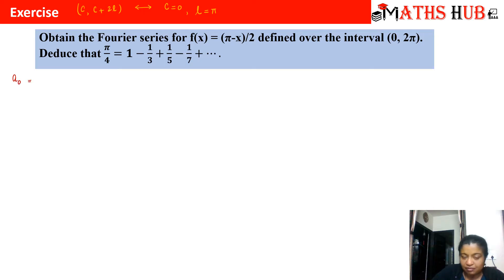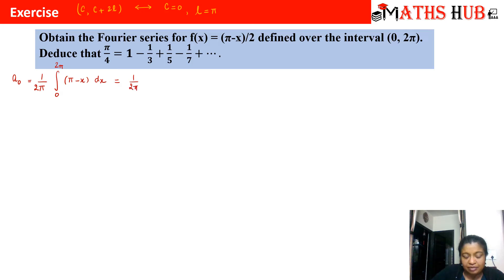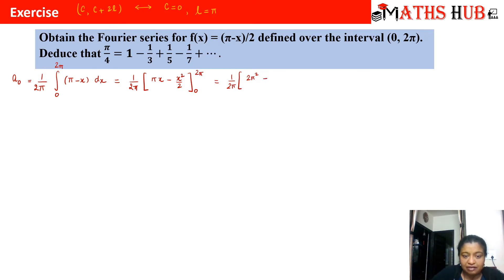I'll substitute the values directly without writing the general formula. So a₀ = (1/l) × integral from 0 to 2π of f(x) = (1/π) × integral of (π - x)/2 dx. Integrating: (1/2π)[πx - x²/2] from 0 to 2π gives (1/2π)[2π² - 2π²] = 0. So the first Fourier coefficient a₀ is 0.